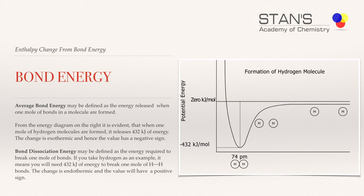Now, if you want to break one mole of hydrogen-hydrogen bonds, the energy that has to be supplied is also the same. Breaking a bond is an endothermic reaction, therefore the value will be positive. Forming a bond is an exothermic reaction, therefore the value will be negative. And this is evident from the graph that you see.